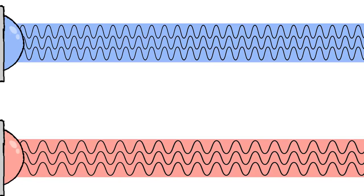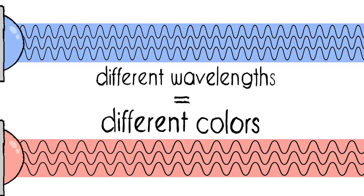To show you why this is, I've got an example with two different beams of light here. One blue and one red. The only difference between these two light beams is the wavelength of the light waves that they are made up of. You see, different wavelengths gives us different colors.